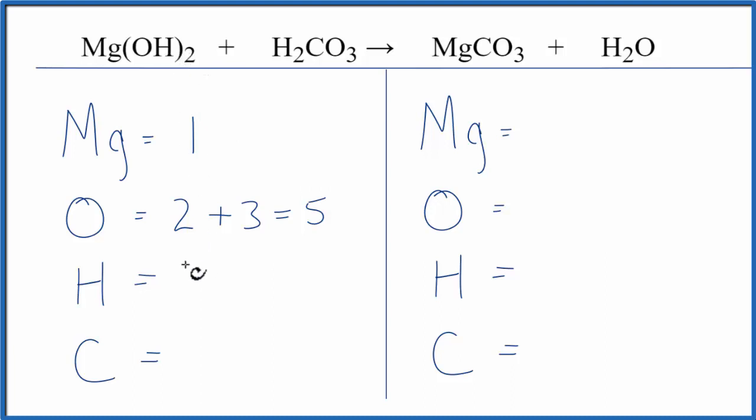2 times the 1, 2 hydrogens, plus we have these 2 hydrogens here in the H₂CO₃. So that gives us 4 hydrogens and there's only 1 carbon.